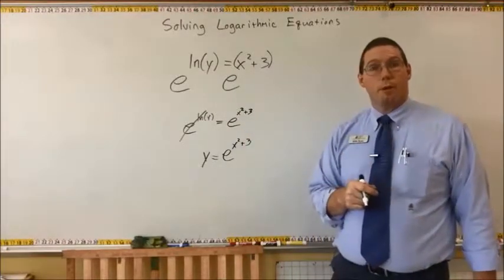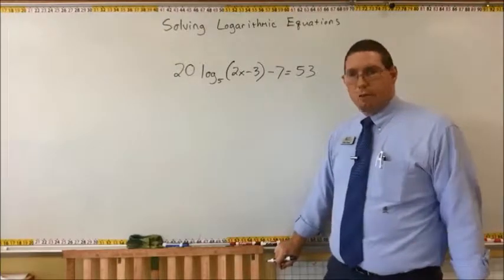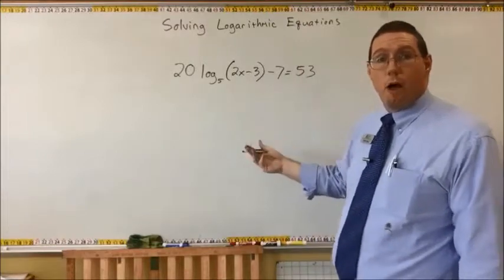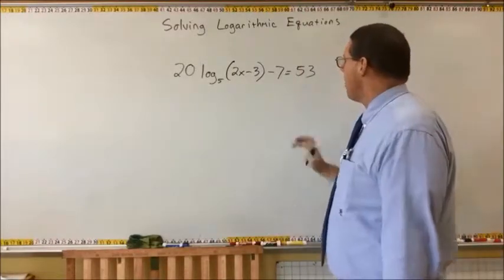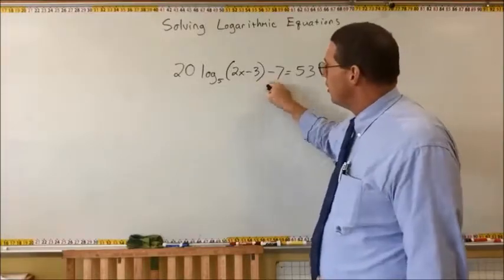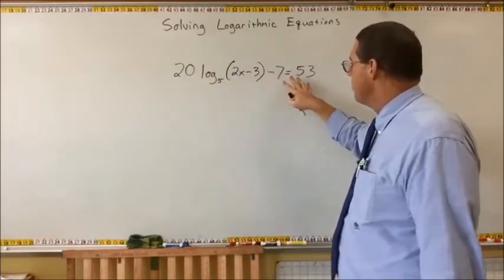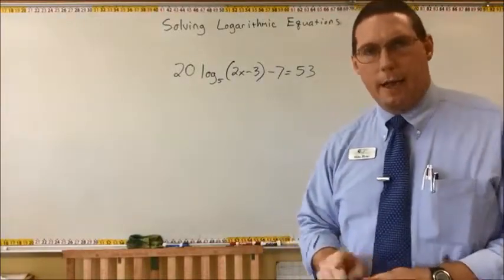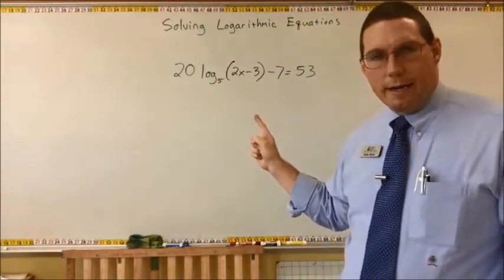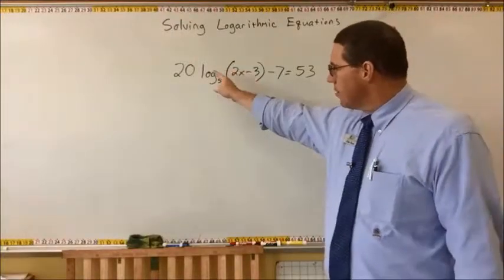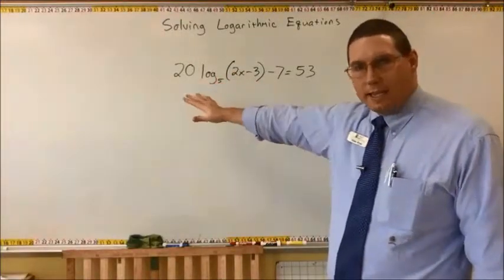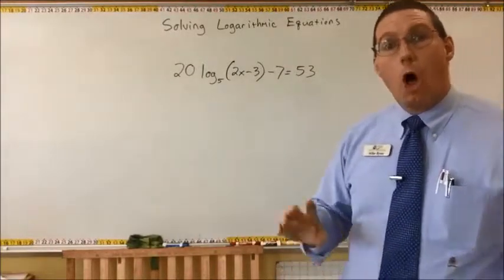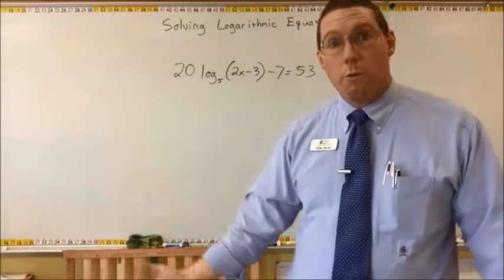Alright, you're going to need a scientific calculator for this one. We have an equation with only a single variable, so we should be able to solve for it. This is a big mess — we've got minus 7 and times 20 on here. It's important to understand that you cannot cancel this logarithm until after you cancel all the stuff around the logarithm. You have to get rid of everything else first — cancel the minus 7, cancel the 20.